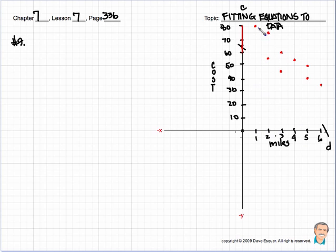So the first point was 1, 80. Then 2, 75. 2, 55. 3, 60. And 3, 45. 4, 50. 5, 40. 5, 50. And the last point was 6, 35. So here's the data.